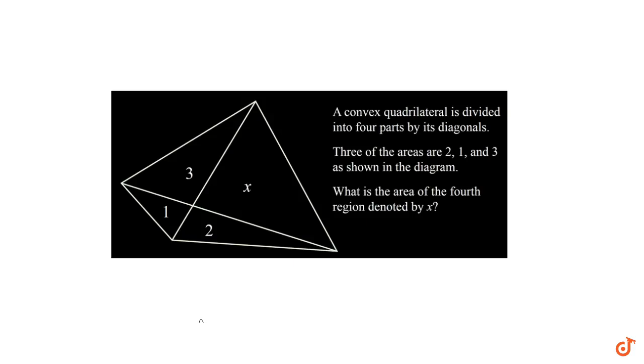Hello everyone, in this question we have a convex quadrilateral divided by its diagonals into four parts. The areas of three parts are 2, 1, and 3 as shown in the figure. What is the area of the fourth region denoted by x?